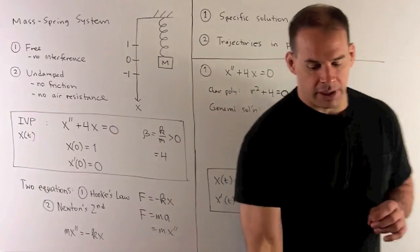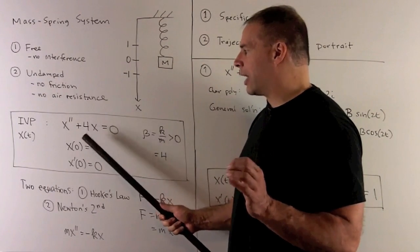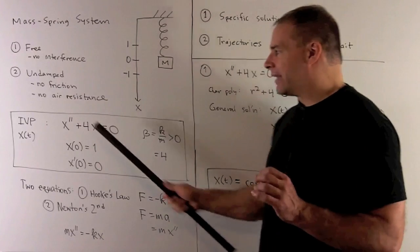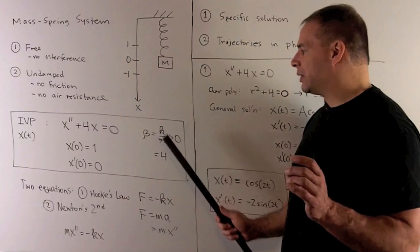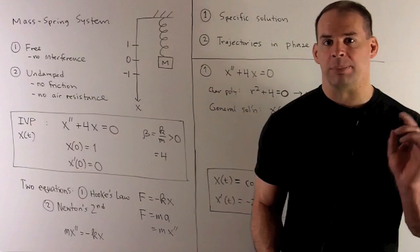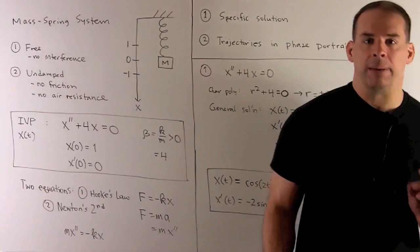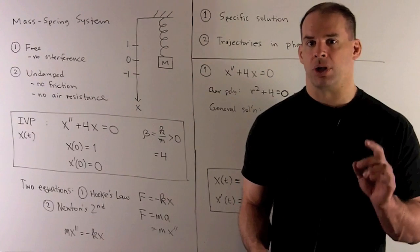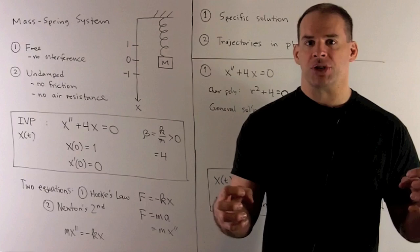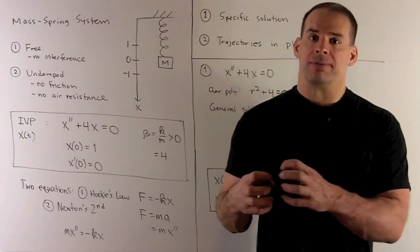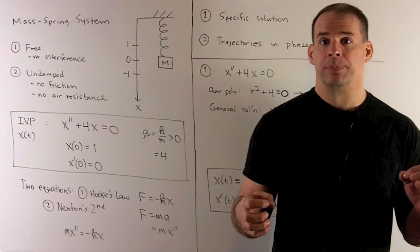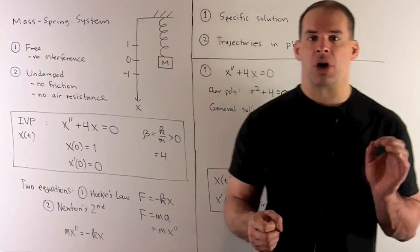For the ODE, we have the second derivative of X plus four times X equals zero. In general, for the free undamped case, we have X double prime plus beta times X equals zero, where beta equals the spring constant over the mass — always a positive number. For concreteness, we let it equal four. This ODE comes from two equations: first, Hooke's Law, which says the force a spring exerts is proportional to how far it is stretched, always pulling back in the opposite direction with a minus sign, scaled by the spring constant K.